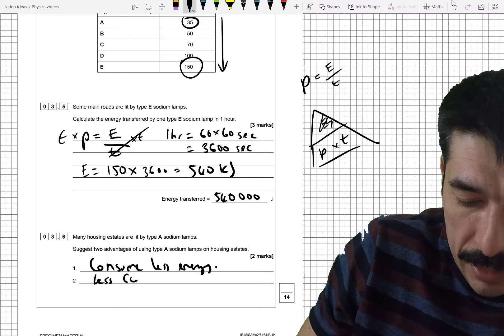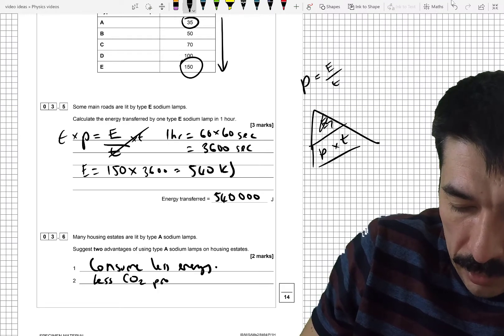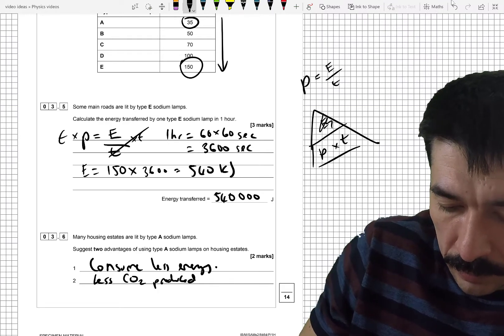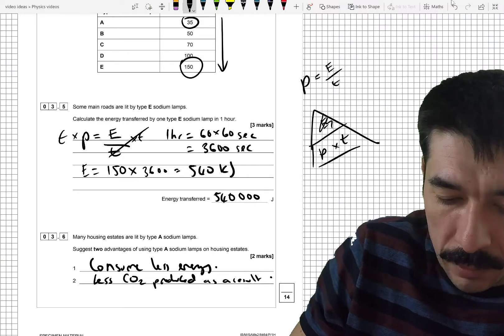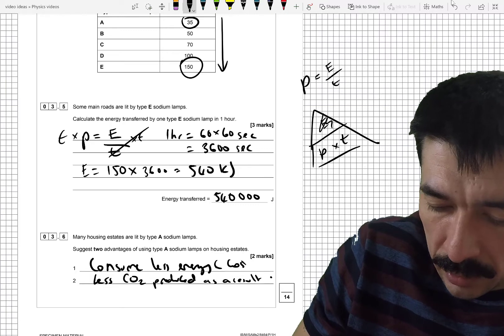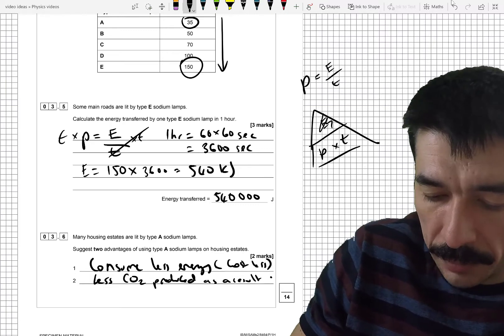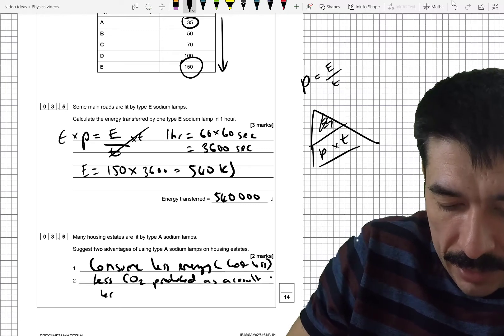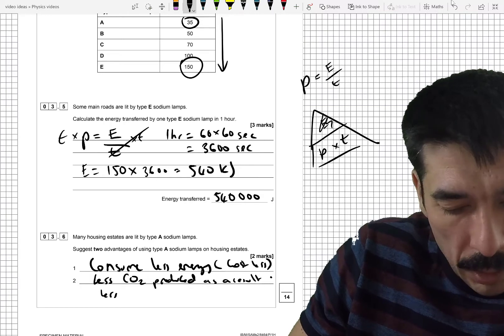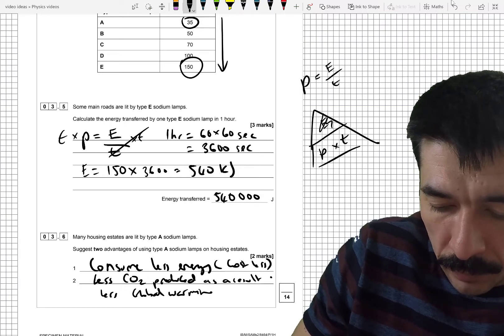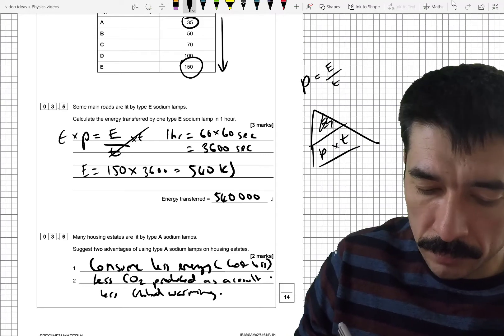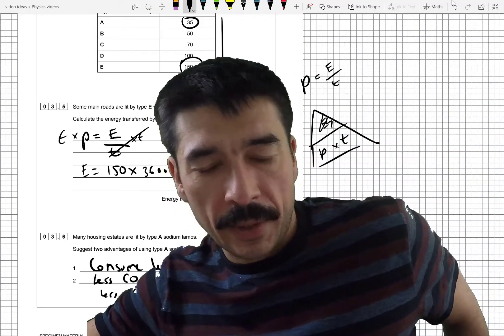So, less CO2 produced as a result. So, consume less energy, so it's going to cost less. That's an advantage. And they produce less CO2 as a result, so less global warming. OK. So, you've got two clear advantages there.